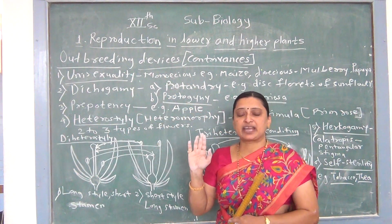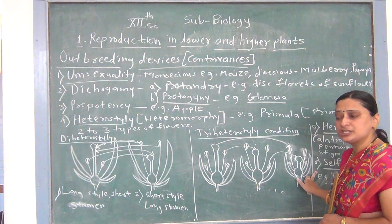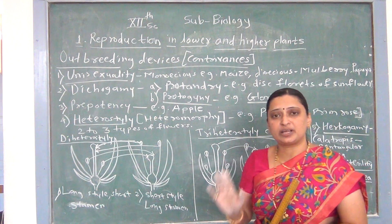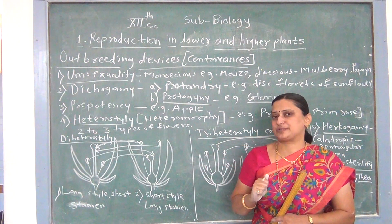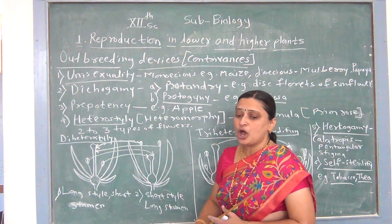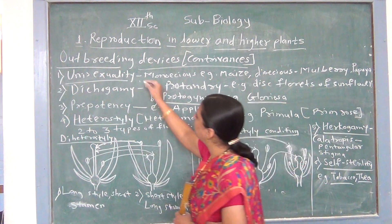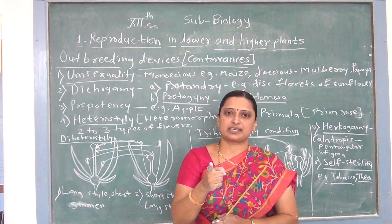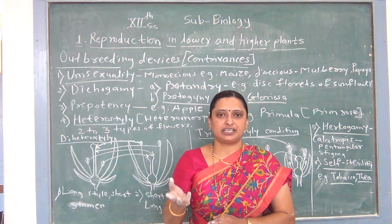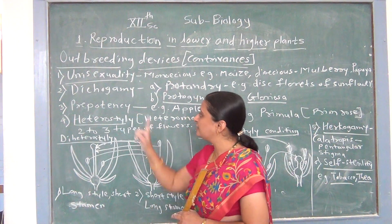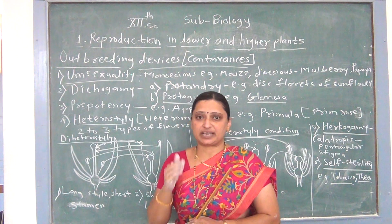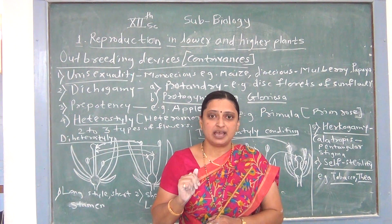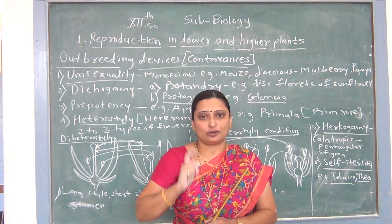Among outbreeding devices, we study a total of 6 devices which encourage cross-pollination but prevent self-pollination. The first device of outbreeding devices is unisexuality, also called dioeclinism. Unisexuality means the flower bears only one sex organ — either a male flower or a female flower. A flower containing only one sex organ is called unisexuality, and having only one sex organ in a flower prevents self-pollination and encourages cross-pollination.